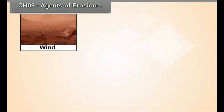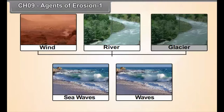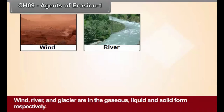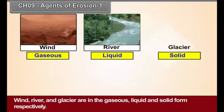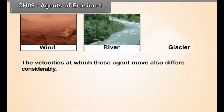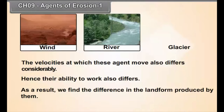The work of wind, river and glacier is controlled by the climate of the region. Sea waves and ground water work in the region wherever they exist. Wind, river and glacier are in the gaseous, liquid and solid form respectively. There is a difference in the density of the matter forming these agents of erosion. The velocities at which these agents move also differ considerably, and hence their ability to work also differs.